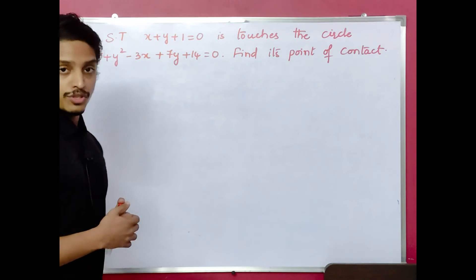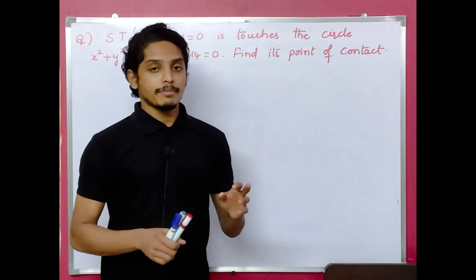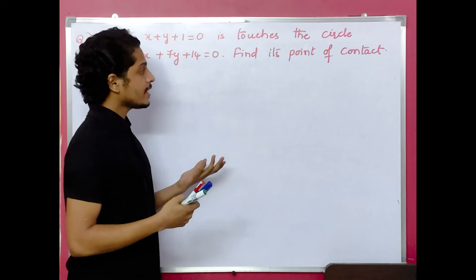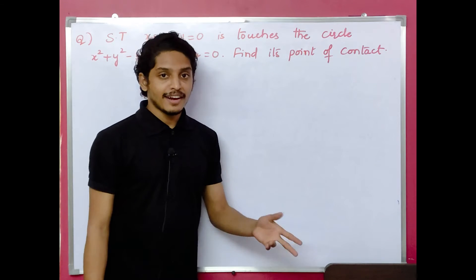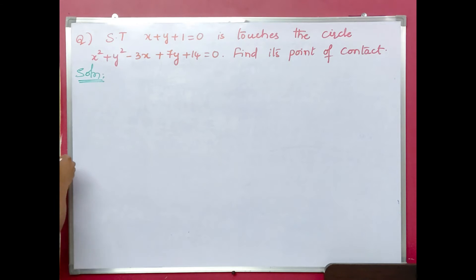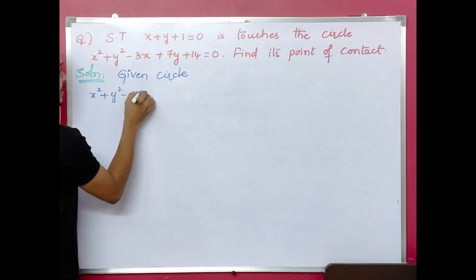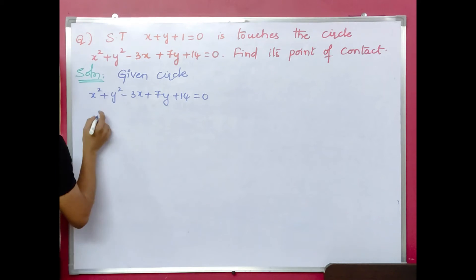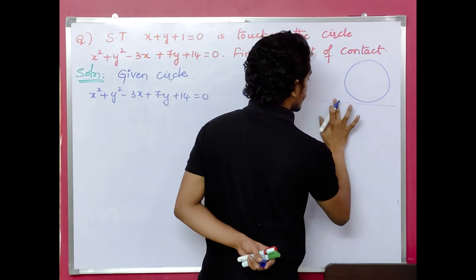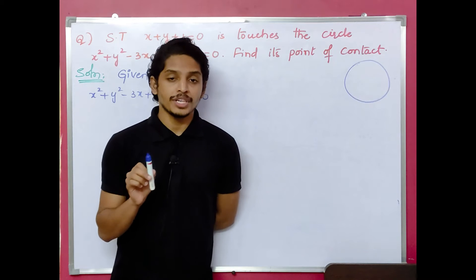Now a very important question: show that x plus y plus 1 equals to 0 touches the circle x squared plus y squared minus 3x plus 7y plus 14 equals to 0, and find its point of contact. We have two parts: first prove the line touches the circle, and second find the point of contact. The rule is radius must equal the perpendicular distance from the center to the line.